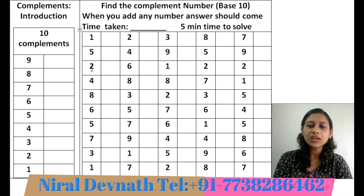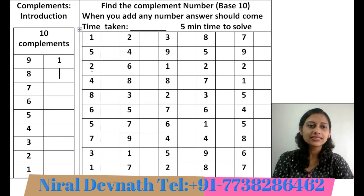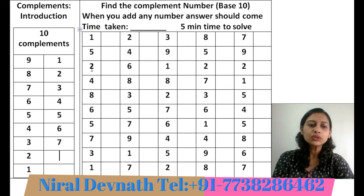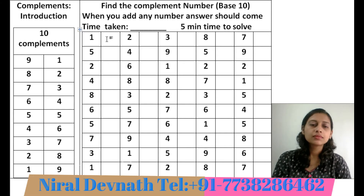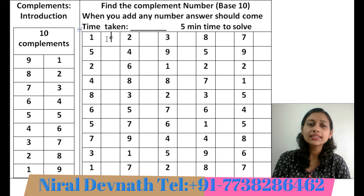This worksheet belongs to base 10. In the first column, you have to write the friends of each number: 9's friend is 1, 8's friend is 2, 7's friend is 3, 6's friend is 4, 5's friend is 5, 4's friend is 6, 3's friend is 7, 2's friend is 8, 1's friend is 9. On the side, start the stopwatch and see how many minutes you take to solve all the questions.